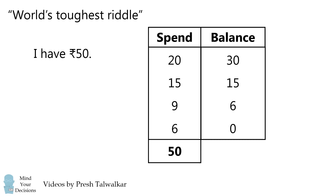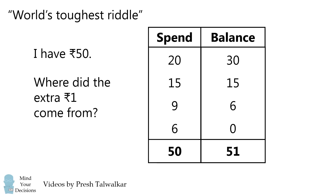Now, what's the total amount in the balance column? Whoa, it's not 50 — it's actually 51. And this is the puzzle. Where did the extra 1 rupee come from?